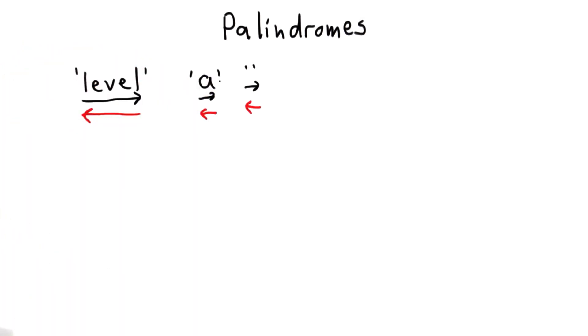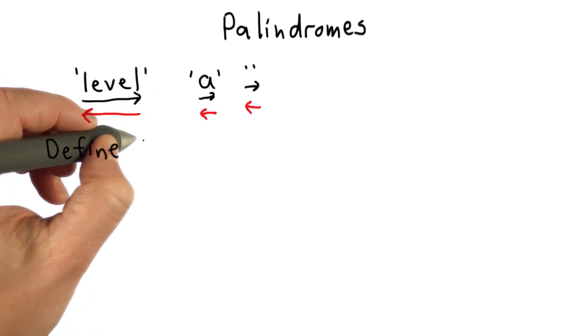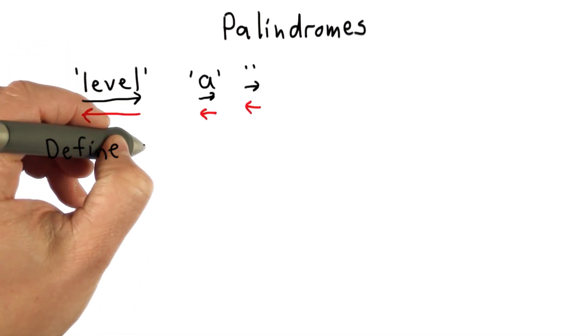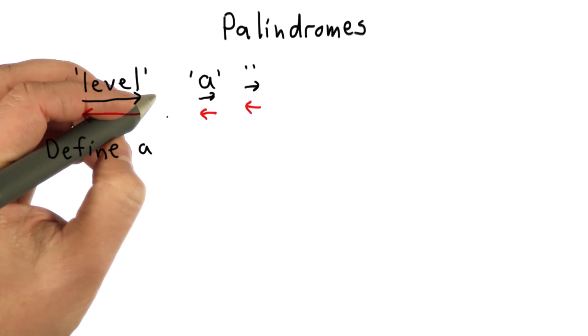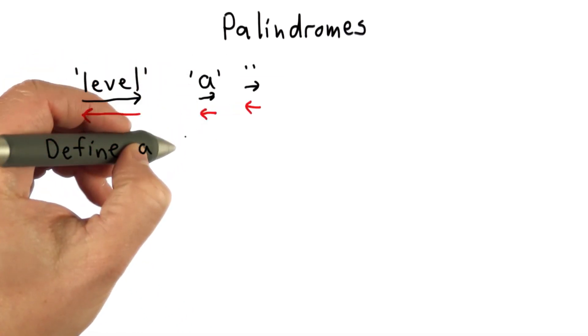So our goal is to define a procedure that will take any string as input and output true if that string is a palindrome. I'm going to give you a few hints how to do this, but start thinking on your own if you can think of a way to define a procedure that tests whether or not a string is a palindrome.